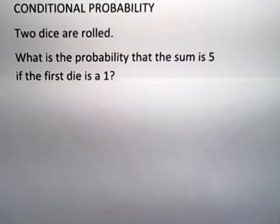Two dice are rolled. What is the probability that the sum is 5 if the first die is a 1?